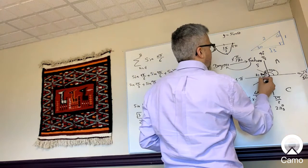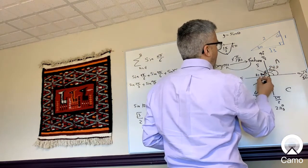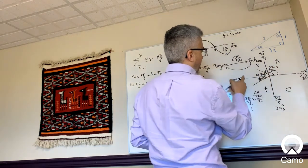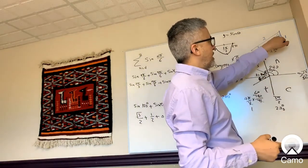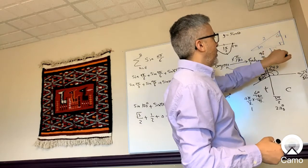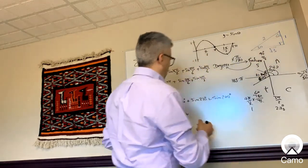The reference angle is 240 minus 180, which is 60. Sine is negative here, and sine 60 is √3/2, except it's negative, so minus √3/2.